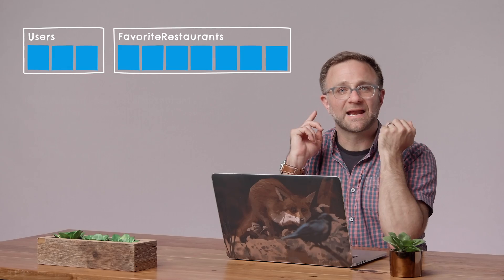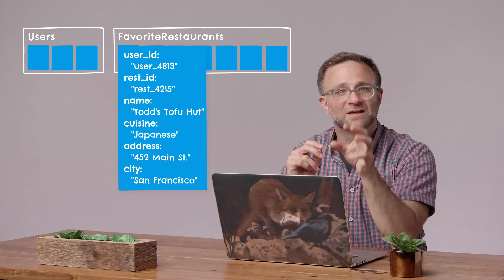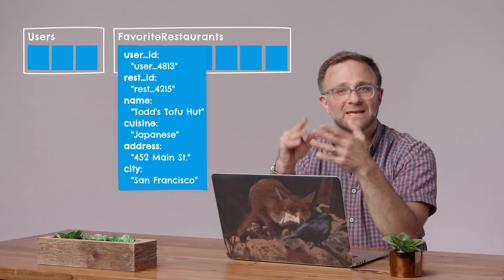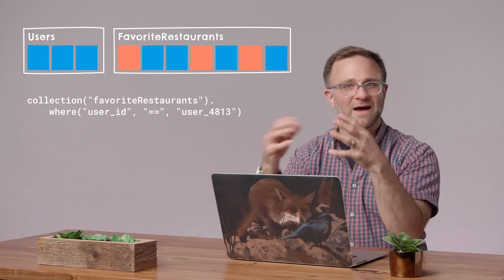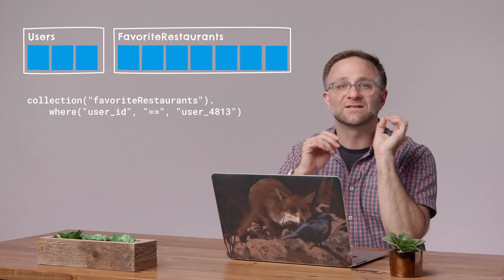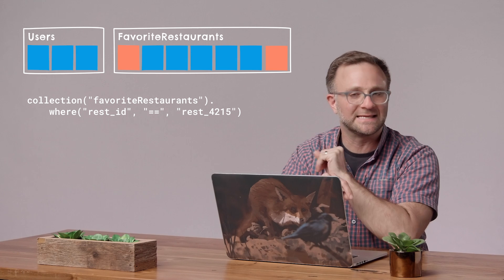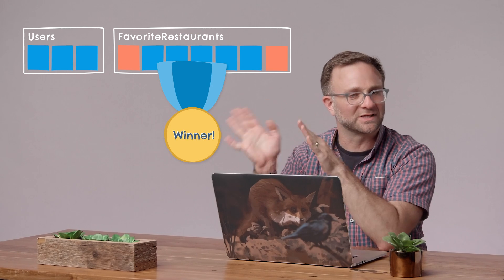But you know what option might work best? A completely separate top-level collection. Imagine a favorite restaurants collection where every document contains a user ID, a restaurant ID, and enough of a snippet about the restaurant to populate a My Favorite Restaurants page. Grabbing all the restaurants favorited by a specific user is a very simple query, making that My Favorites page very straightforward. And it's just as easy to grab all instances of a particular restaurant if I ever need to change or update this denormalized data. I'm going to say this is my favorite option, at least for this particular setup.